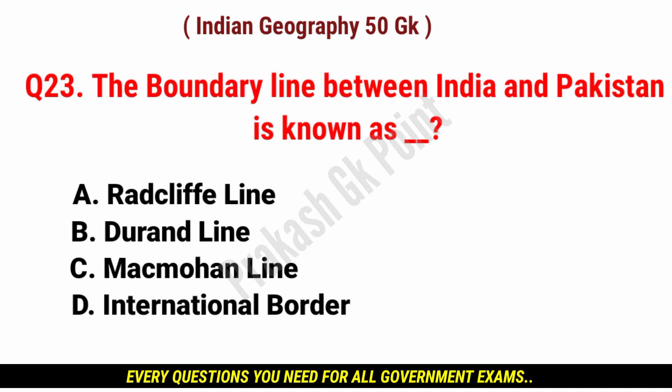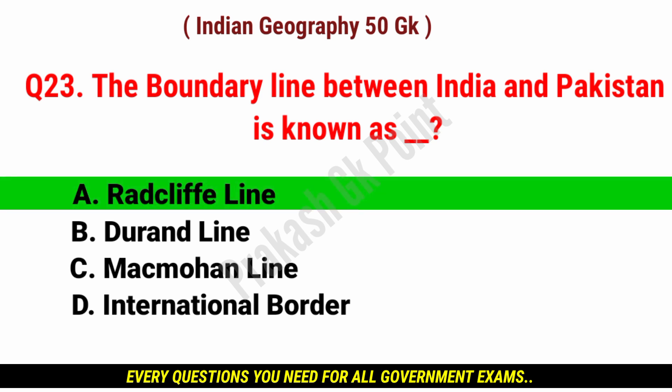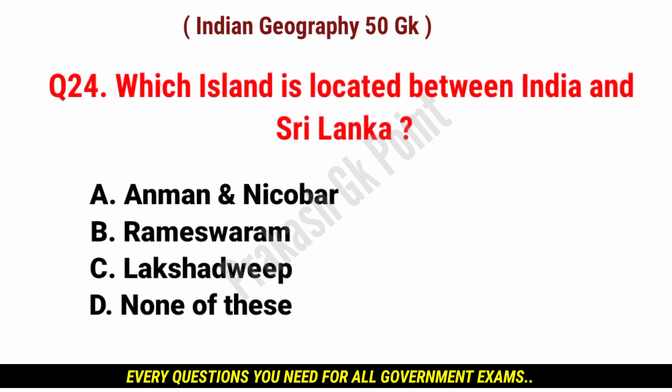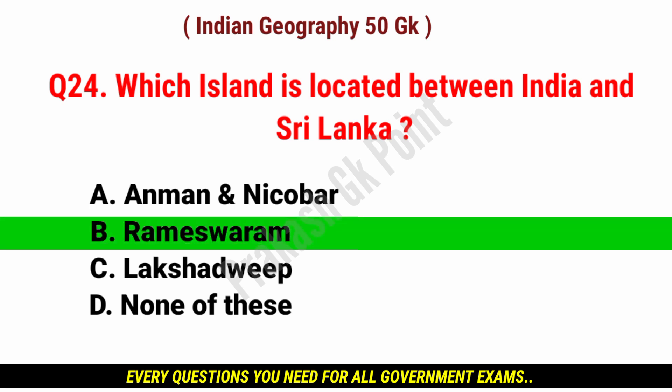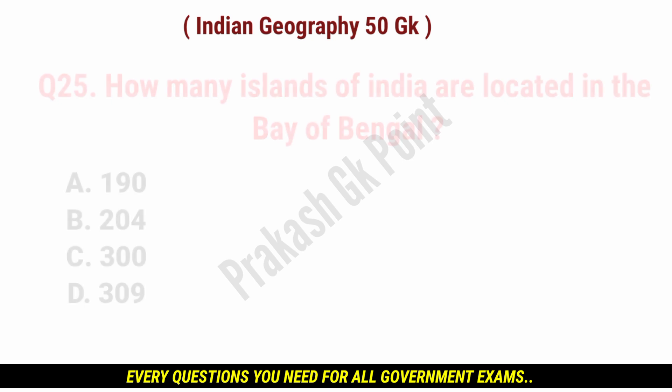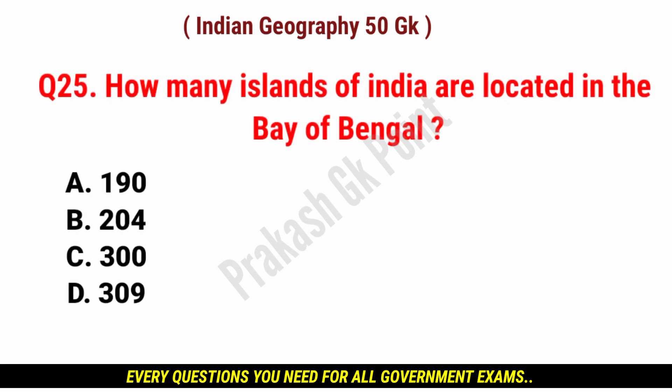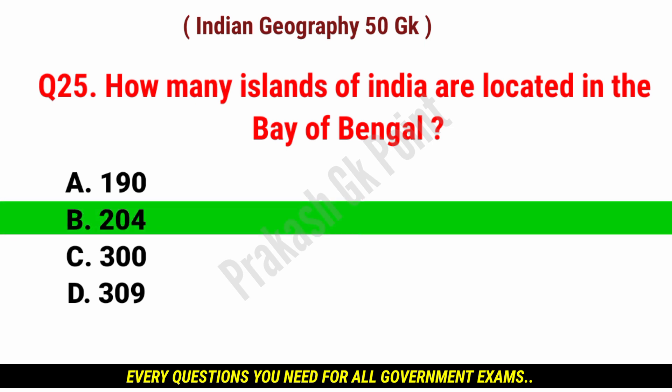The boundary line between India and Pakistan is known as? Answer: option B. How many islands of India are located in the Bay of Bengal? Answer: option B, 204.